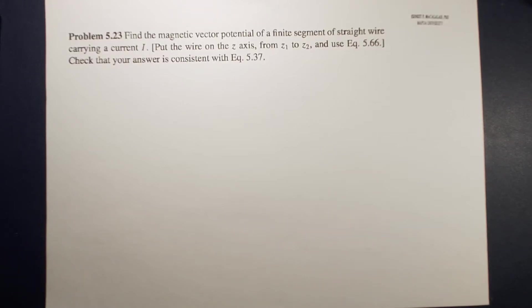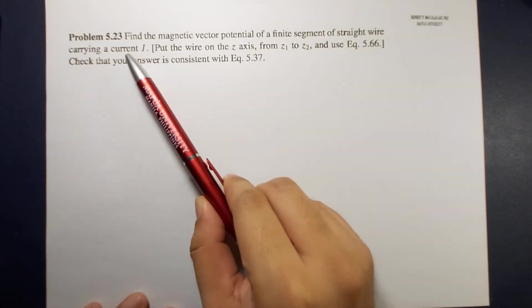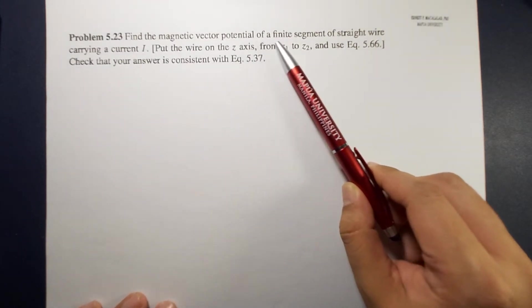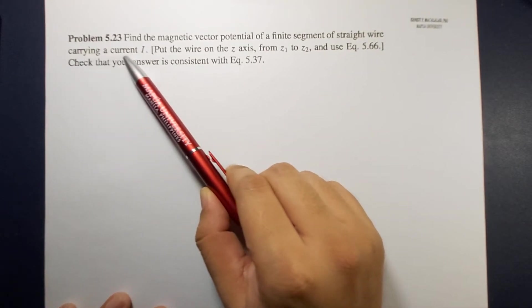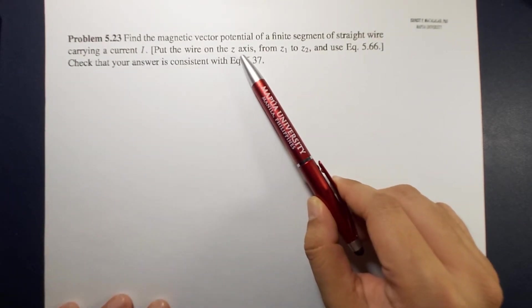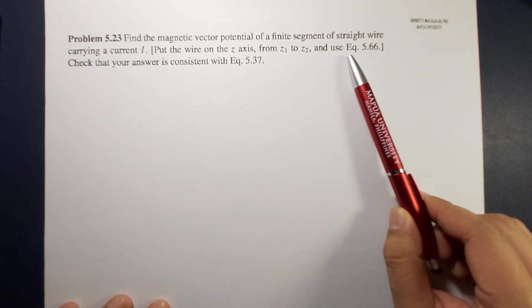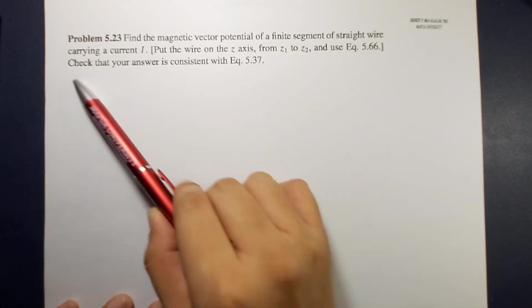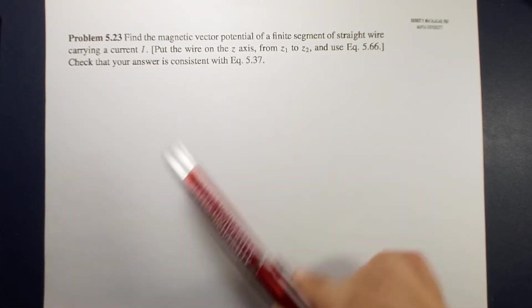Hello guys, it's me again Sir Ernest and today we are going to solve a problem involving vector potential. The problem reads, find the magnetic vector potential of a finite segment of a straight wire carrying a current i. Put the wire on the z axis from z1 to z2 then use equation 5.66. Check that your answer is consistent with equation 5.37.